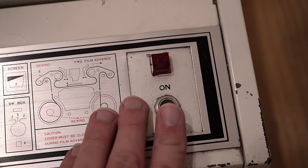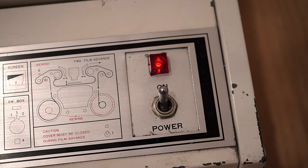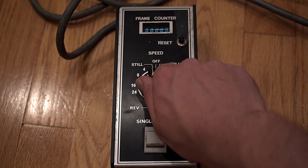To turn on the projector, you just switch the power switch to the on position. From there, you just move the dial to the desired speed.